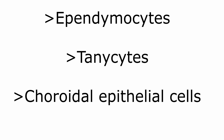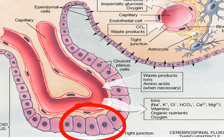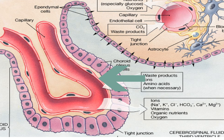Ependymal cells can be divided into three groups: ependymocytes, tanycytes, and choroidal epithelial cells. Ependymocytes line the ventricles and the central canal of the spinal cord. As you can see, ependymocytes make up the lining of these cavities — four cavities in the brain and one cavity in the spinal cord, the central canal. In the diagram, this is the cerebrospinal fluid filling the cavity, this is the neural tissue outside the cavity, and this is the blood vessel of the brain.